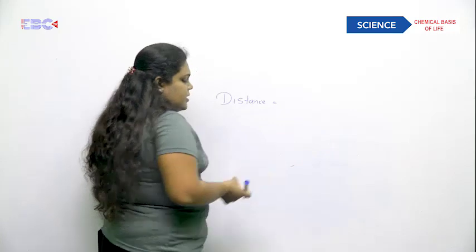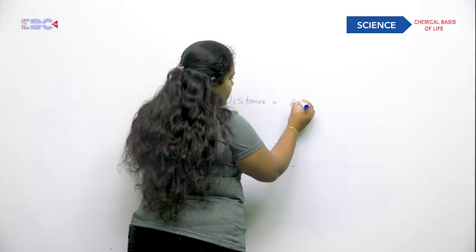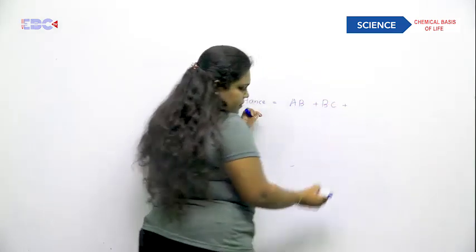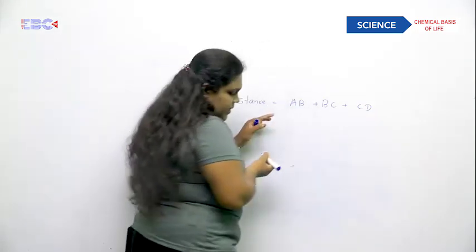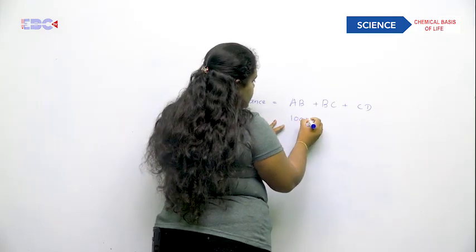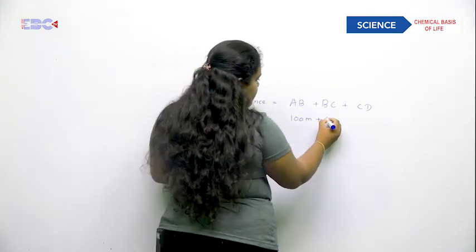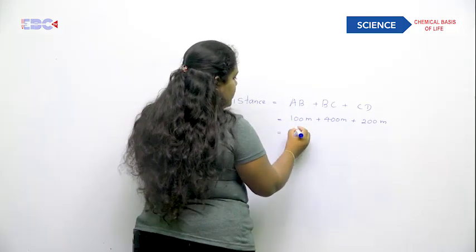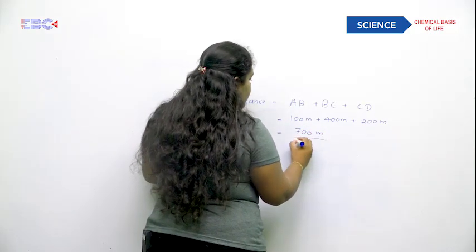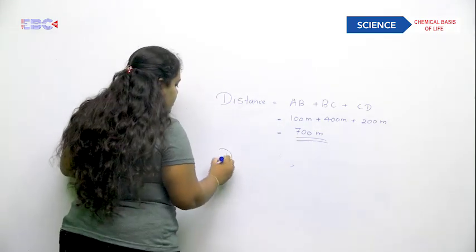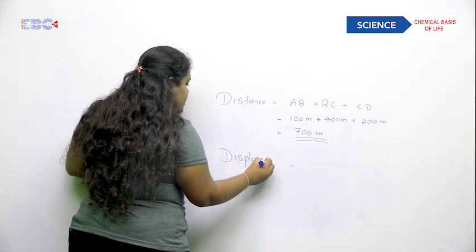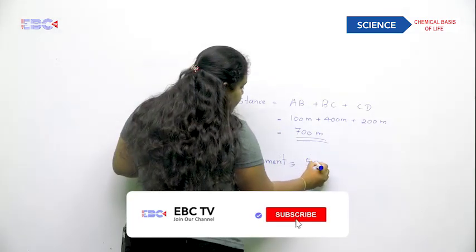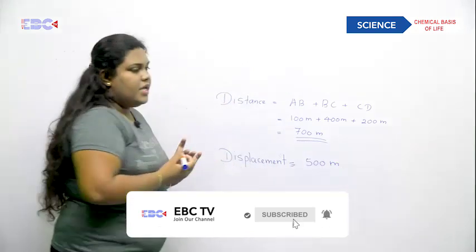The distance can be calculated by adding AB + BC + CD: 100 meters plus 400 meters plus 200 meters gives 700 meters. The displacement is the direct straight-line distance from A to D, which is 500 meters.